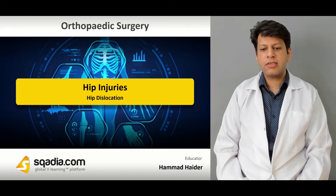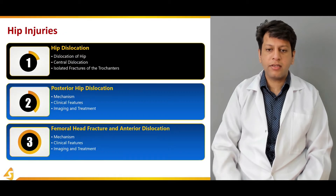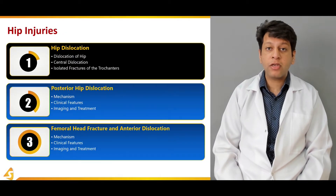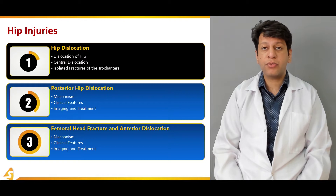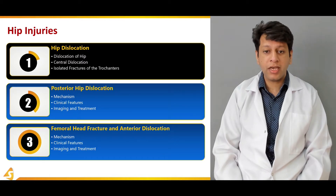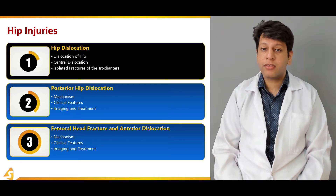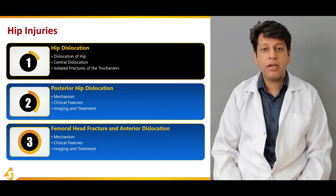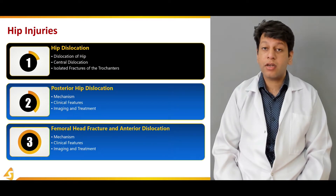Moving on to our first section — hip dislocation. We will briefly discuss the dislocation of the hip, its all types especially the anterior, posterior, and central type. In this section we want to briefly touch upon the central hip dislocation, along with isolated fractures of the greater and lesser trochanter.